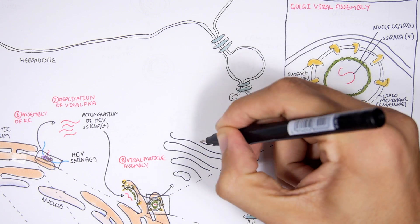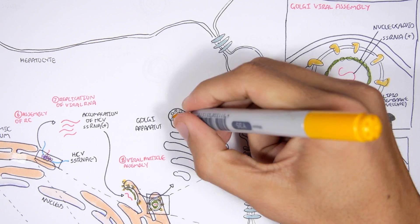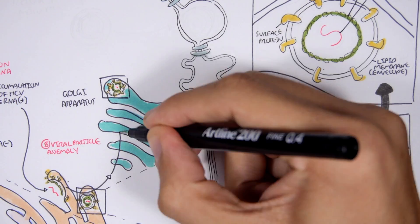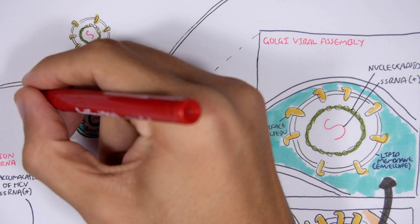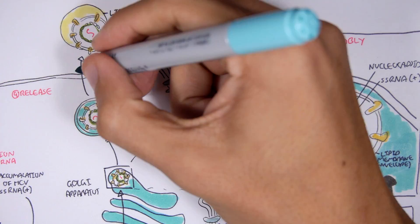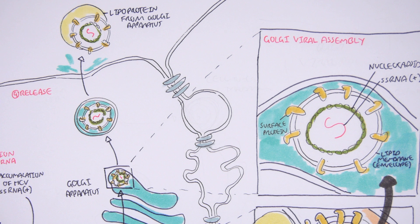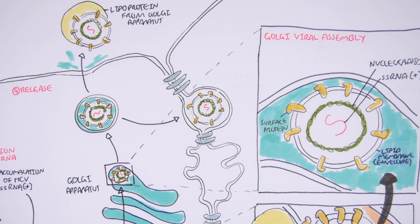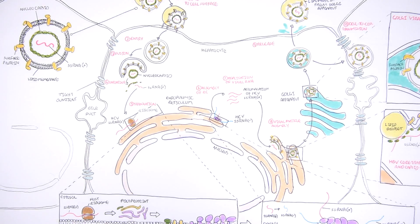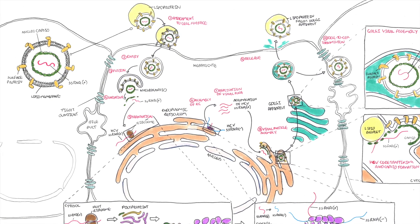The hepatitis C virus particle is packaged up from the ER to the Golgi apparatus. The Golgi apparatus packages it up and puts it in an endosome, which is then released into the extracellular matrix. Notably, the Golgi apparatus also includes a lipoprotein with the packaged virus, which will help it invade other hepatocytes. Finally, the hepatitis C virus can infect adjacent hepatic cells through cell-to-cell transmission, which is facilitated by the hepatocytes being tightly packed together.